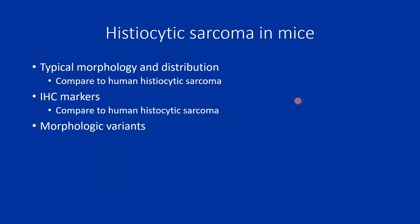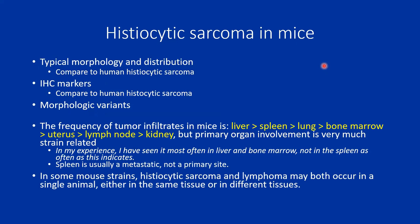I'll give a brief overview of what I talked about last time, going a little quicker, since not everyone here was here last week. I'll be showing typical morphology and distribution and comparing it to the human case, along with different IHC markers we use, then go into some morphologic variants that can be very confusing. I created a PowerPoint because there is so much variety.